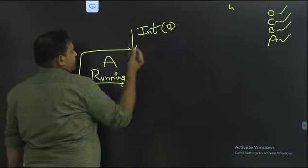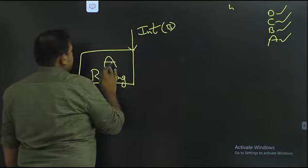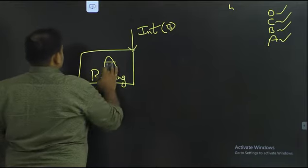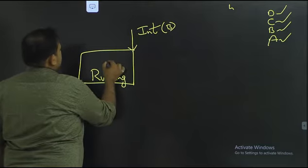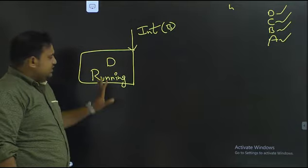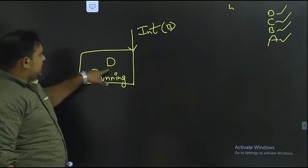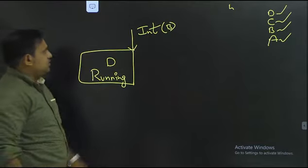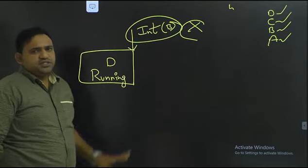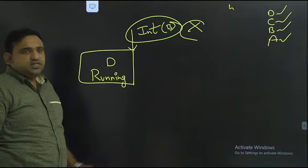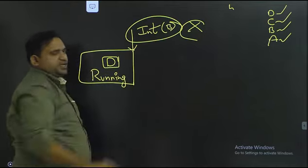If task D is running and an interrupt comes from B, since D has the highest priority and B has lesser priority, the interrupt from B is ignored and B will be serviced after task D finishes. If instead task A is running and interrupts come from both B and C simultaneously, C will be serviced first by stopping task A, because C has the higher priority.